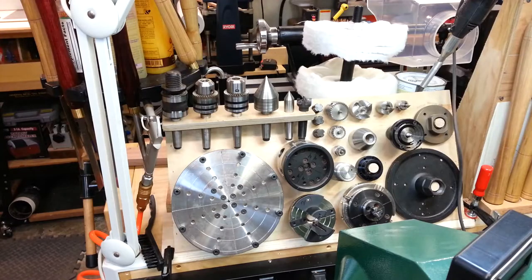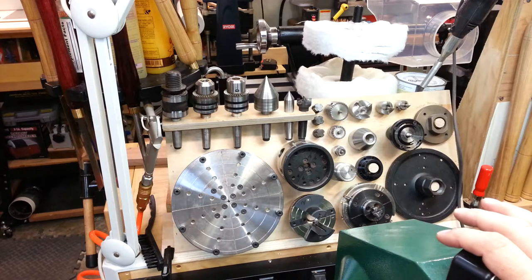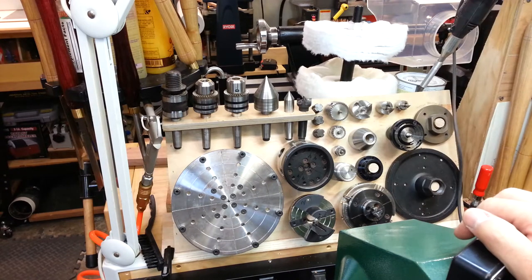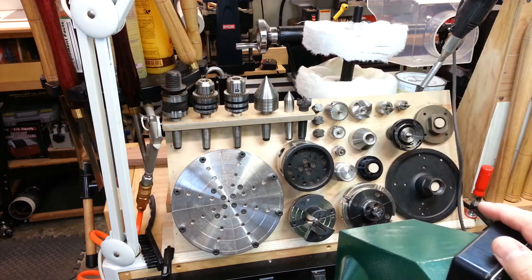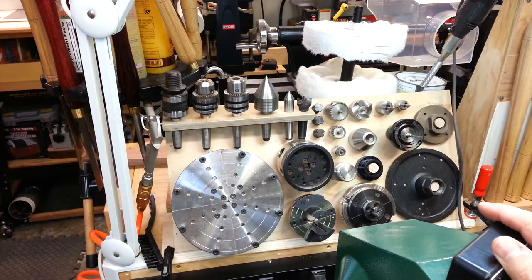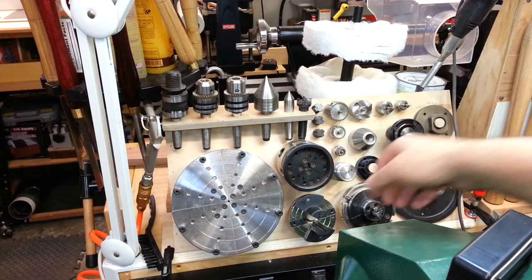The great thing about the green lathe and the little black lathe in the back is they have the same headstock spindle size. So they're one by eight. All of my chucks are interchangeable with both of them. And so I want to do some drilling.